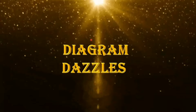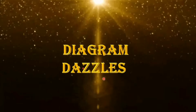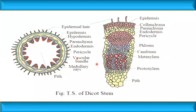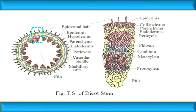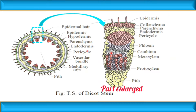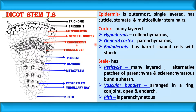In this session of Diagram Dazzles, let us focus on plant anatomy from the NCERT textbook — the transverse section of the dicot stem. The first picture shows the complete section of the dicot stem with vascular bundles arranged in a ring. We are going to draw a small enlarged part highlighting the details of the vascular bundle, from the outermost layer called the epidermis. The epidermis is single-layered and outermost.